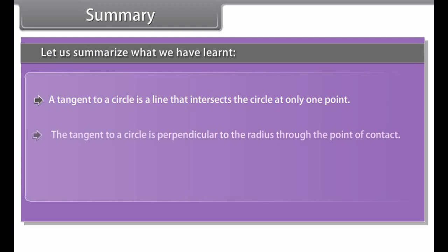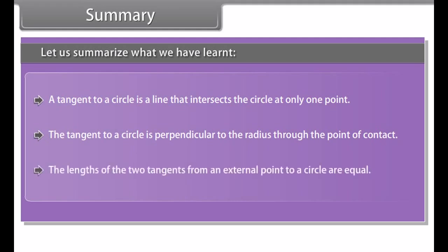Summary. Let us summarize what we have learned. A tangent to a circle is a line that intersects the circle at only one point. The tangent to a circle is perpendicular to the radius through the point of contact. The lengths of the two tangents from an external point to a circle are equal.